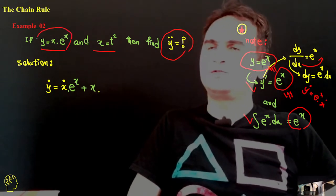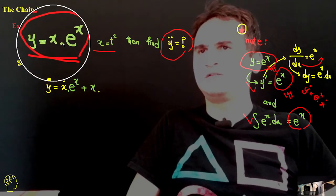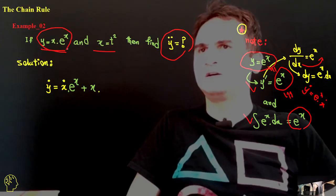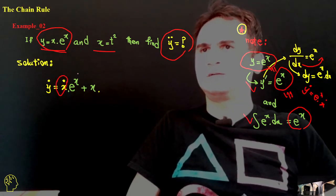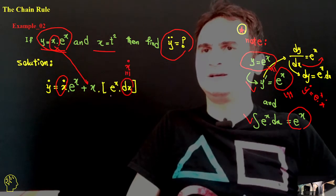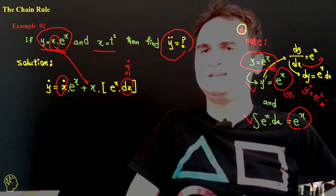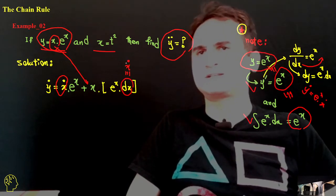So if you want to make a derivation of this term, the derivation of the first part is x dot times the second part like a constant, and plus x like a constant, and the derivation of the second part, which is e to the x times dx, which is dx itself is equal to x dot.